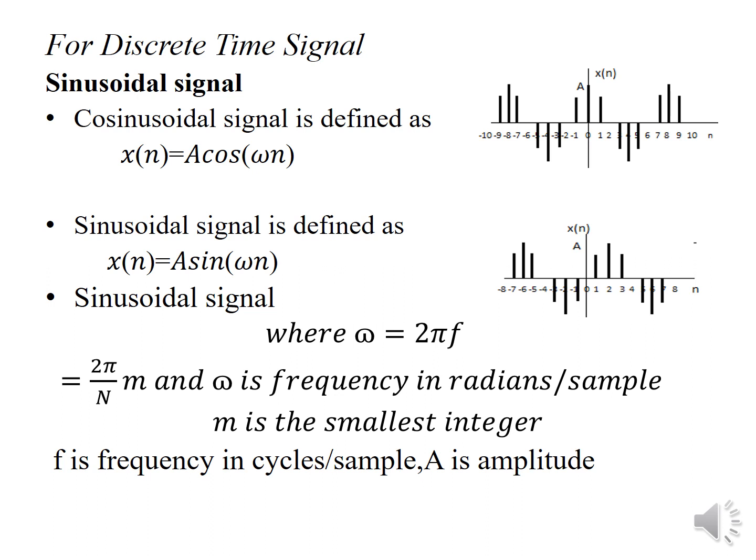For discrete time signal, the cosine signal is represented as x(n) = A cos(ωn) and the sine signal is given as x(n) = A sin(ωn), where ω = 2πf = 2πm/N. Here ω is the frequency in radians per sample, m is the smallest integer, f is the frequency in cycles per sample, and A is the amplitude.